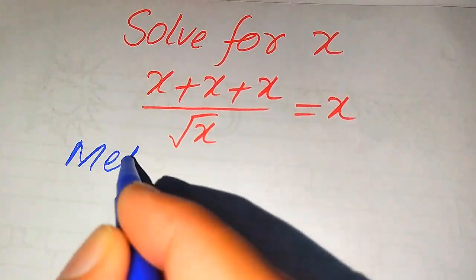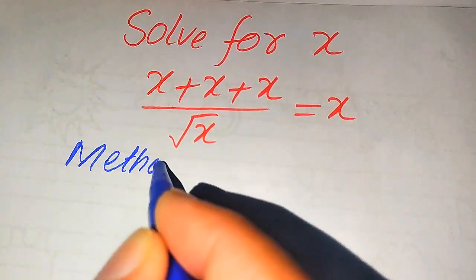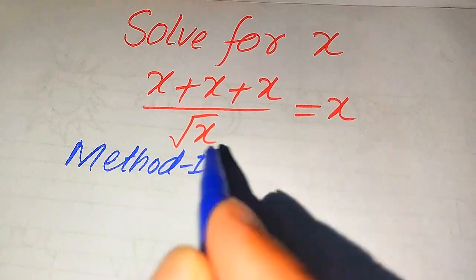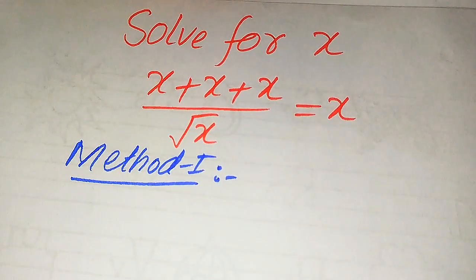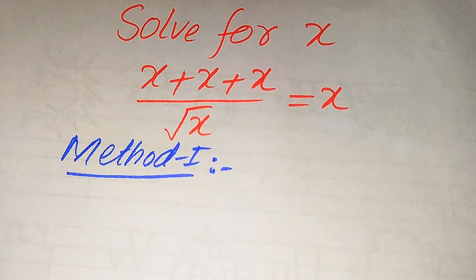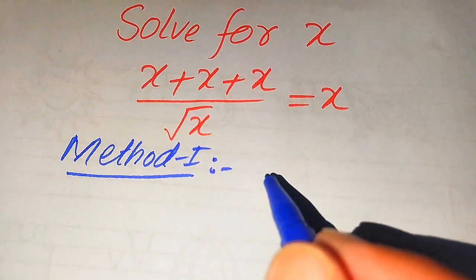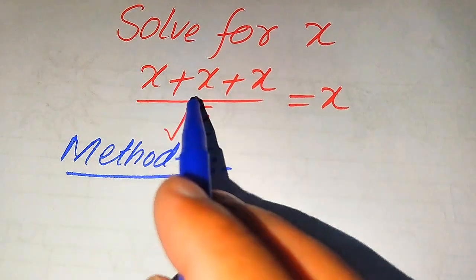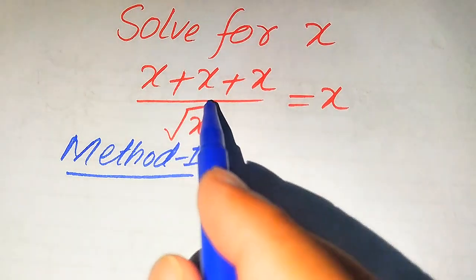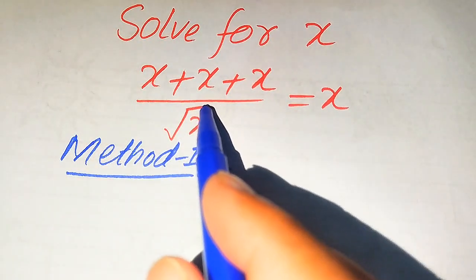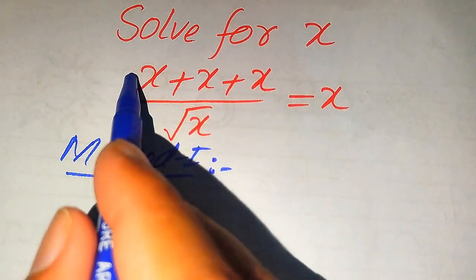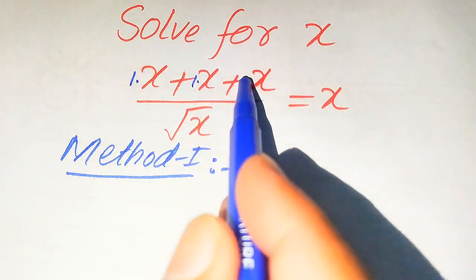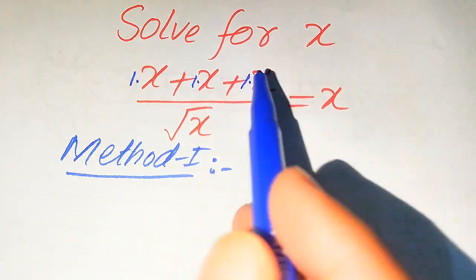I hope you like both of these methods, but if you have any other method in your mind please don't hesitate to write it into the comment section. In the first method, you see that this is the same variable term added three times, so when we add the same variable term three times it means that we need to add the coefficients of all of these three terms.